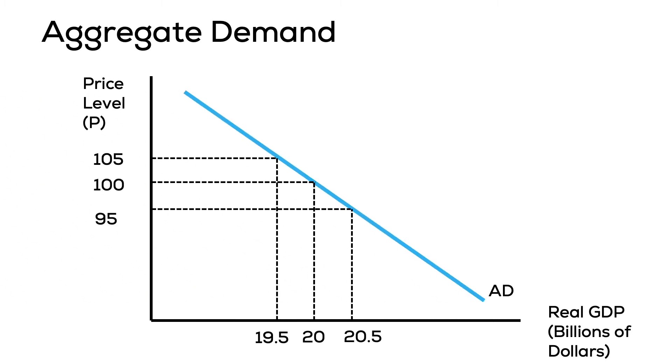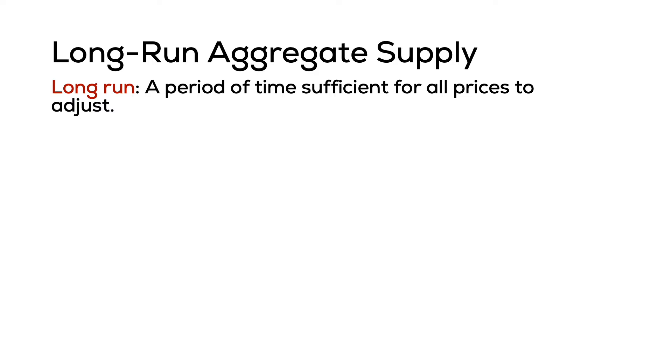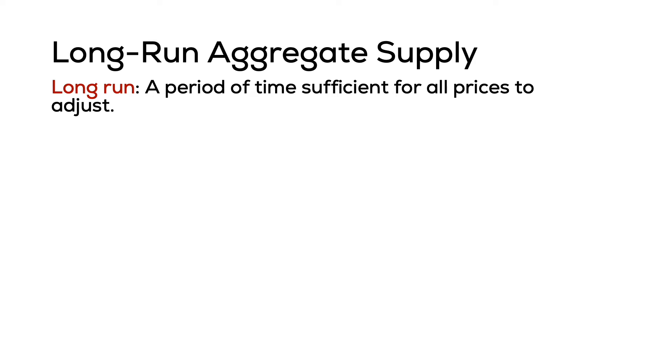The long-run aggregate supply curve represents the behavior of firms in the long run, meaning firms have full flexibility to change all their prices. Recall when we talked about the short-run aggregate supply curve, we said that the reason it's upward sloping is because in the short run some prices are sticky and others are flexible, and this mismatch causes firms to be able to increase profits when overall price levels change.